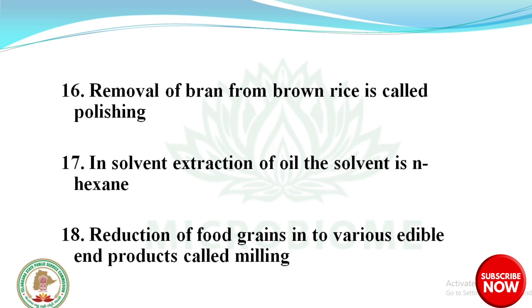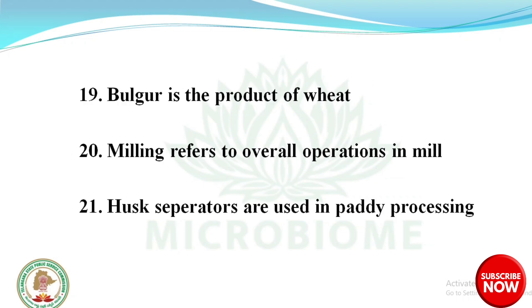Removal of bran from brown rice is called polishing. In solvent extraction of oil, the solvent is N-hexane. Reduction of food grains into various edible end products is called milling. Bulgur is a product of wheat. Milling refers to overall operations in a mill.